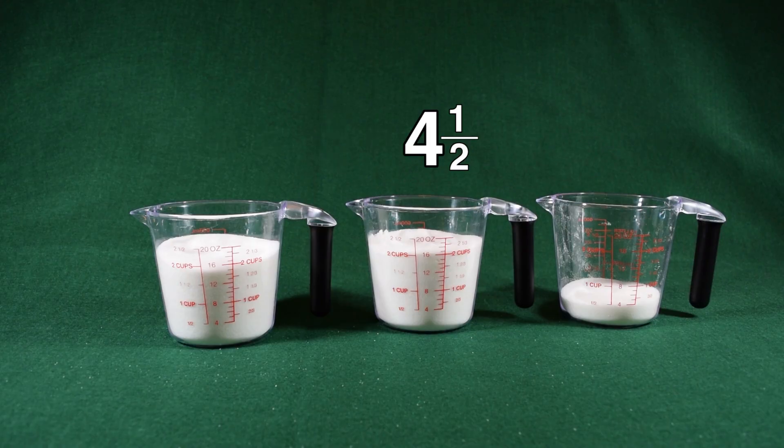So when I multiply by a whole number, I always make it into an improper fraction by using one as my denominator.